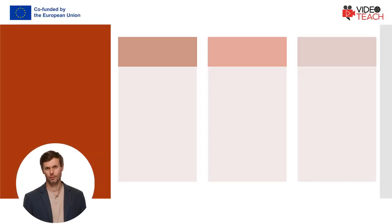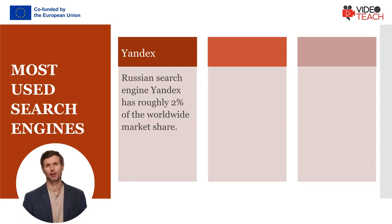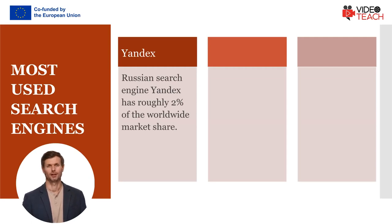Fourth, Russian search engine Yandex, which has roughly 2% of the worldwide market share. It is the most used search engine in its home country, with Google in the number 2 spot. Yandex has many quality indicators it can display alongside search results. One of them is the site quality index, SQI, which indicates how useful your site is to users.